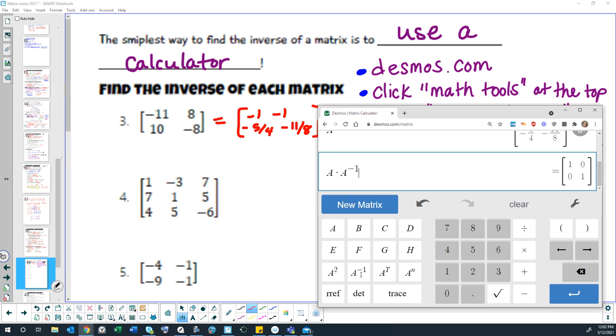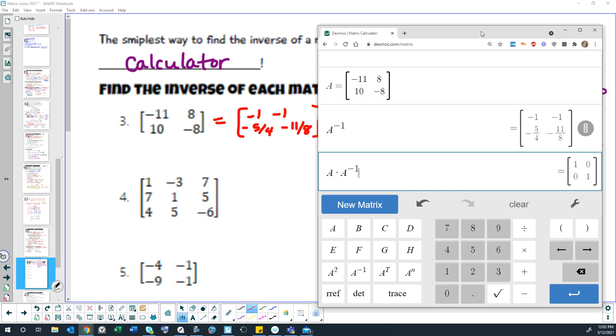So I have matrix A, which is the matrix I originally typed in. This represents matrix A and then A to the negative 1 is this matrix right here. So this is the original matrix and this is the inverse matrix. I've asked those to multiply together. You can see my answer over here on the right. What happens when I multiply those two matrices together? What matrix do I get? I get 1, 0, 0, 1. I get the identity matrix.